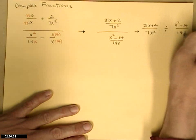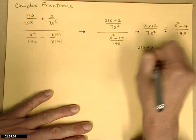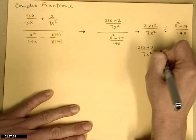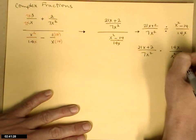But we all know that if we divide by a fraction, we take that second fraction, flip and multiply. So times 14x over x squared minus 14.